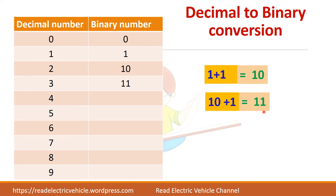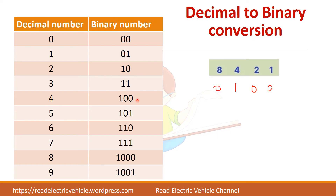Similarly, for decimal 4, put 1 in the 4's position and remaining bits are 0, so binary 100 is equivalent to 4. For 5, the 4's and 1's positions have 1, giving 5. For 7, all three bits are 1, so 4 plus 2 plus 1 equals 7. So up to 7 you can use a 3-bit number.